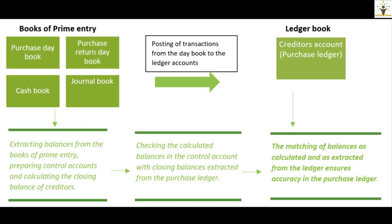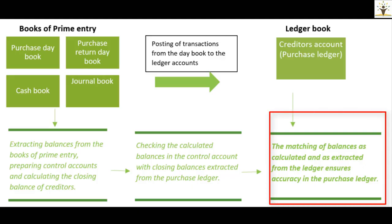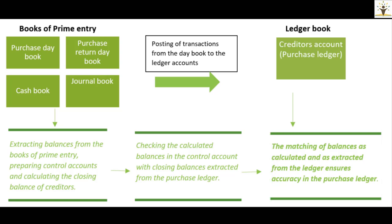The same concepts can also be applied to the purchase ledger control account, which is a total creditors account, where transactions are recorded by extracting information directly from the books of prime entries and then balancing the purchase ledger control account. The closing balance in the purchase ledger control account is compared to the total of balances in all the creditors accounts in the purchase ledger. If these two balances do not match, then it can be concluded that one or more errors have been committed in the purchase ledger.